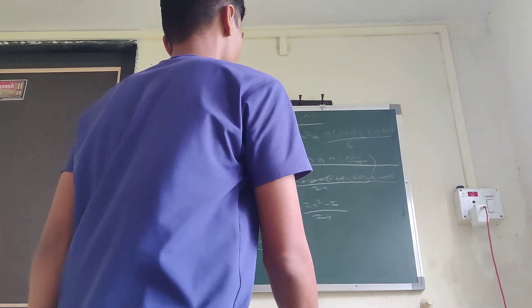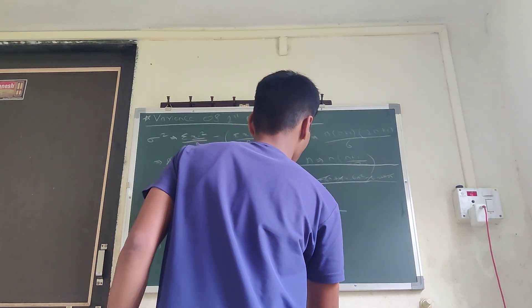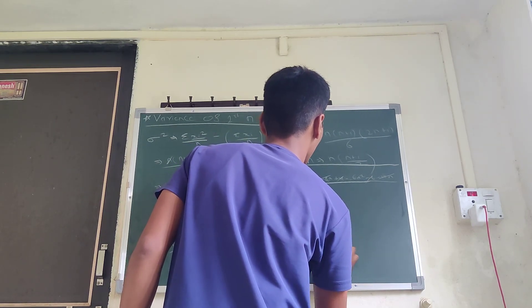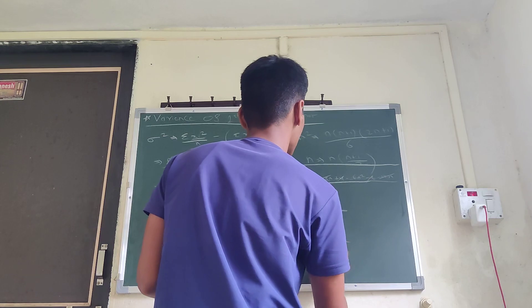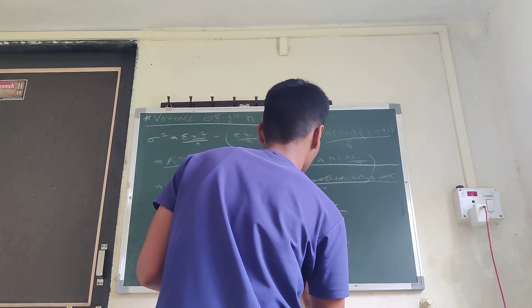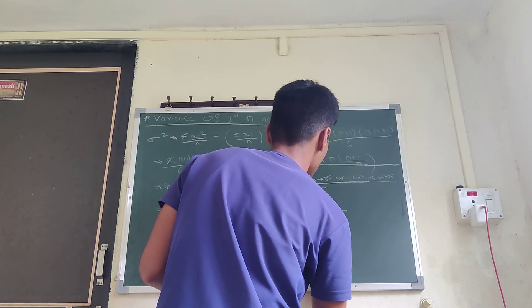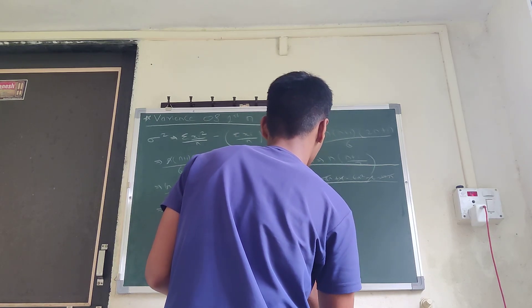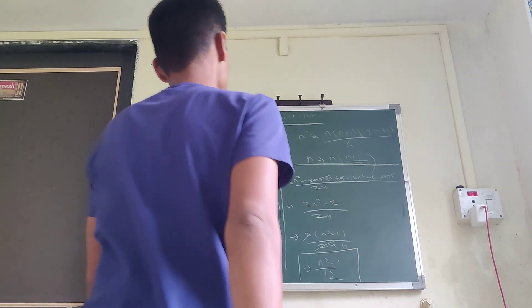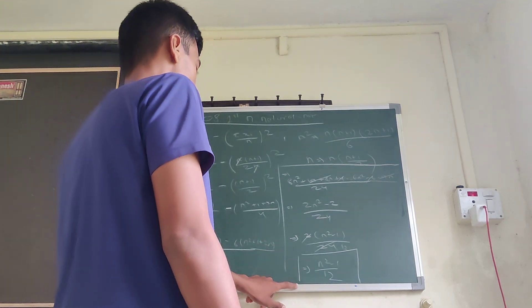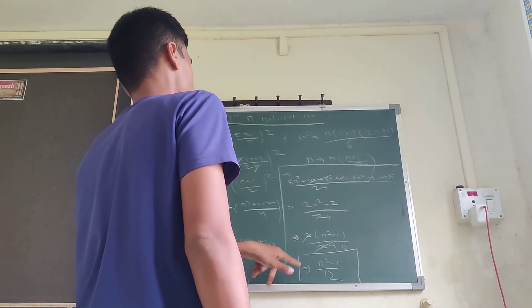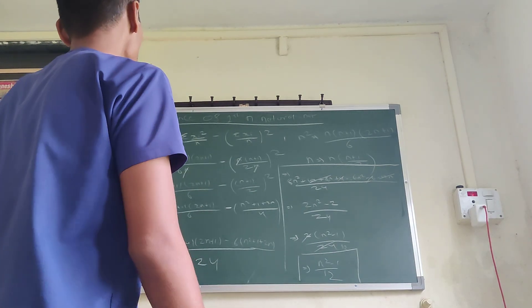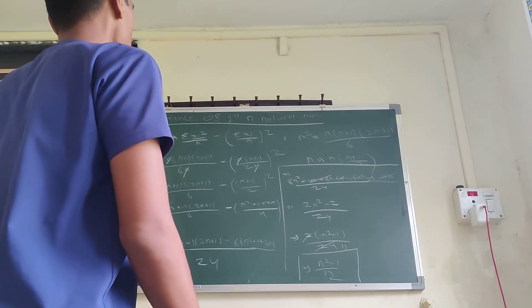We can take 2 as common, giving 2(n²-1) upon 24, and cancelling the 2, the final result is (n²-1) upon 12. So guys, we can use this formula as a shortcut for the variance and also for the standard deviation of the first n natural numbers. Hope you understood — that's all for today.